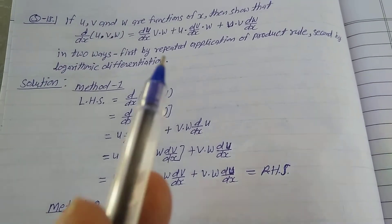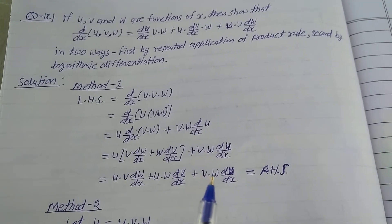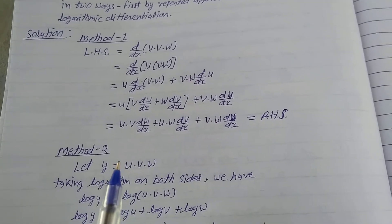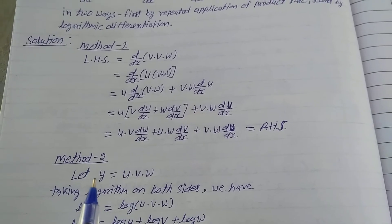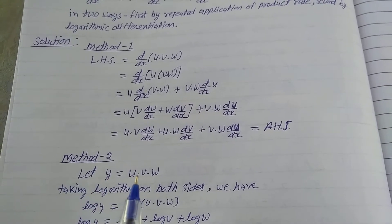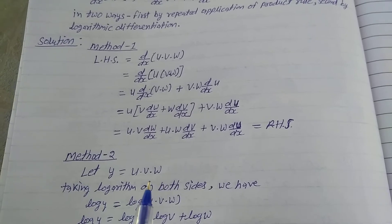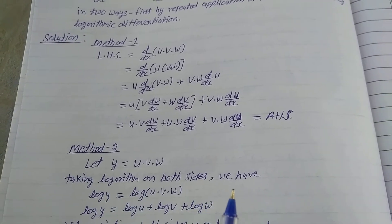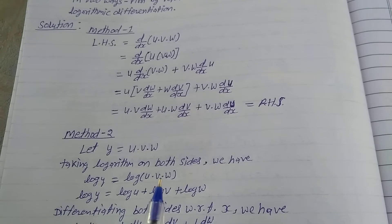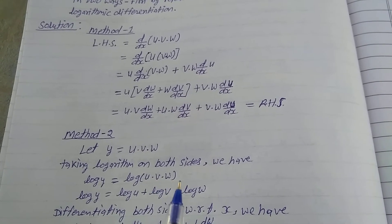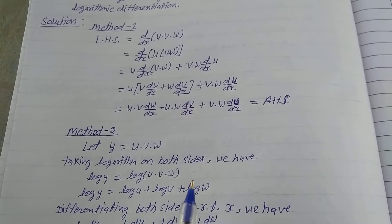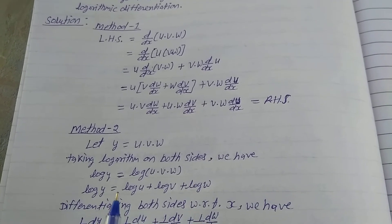The function is given, so LHS is equal to RHS — that is proved. Second method: by logarithmic differentiation. Let y = u·v·w. Taking logarithm on both sides, we have log(y) = log(u·v·w).